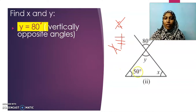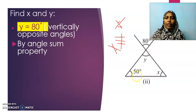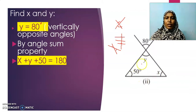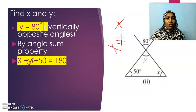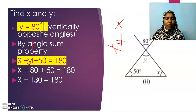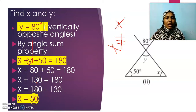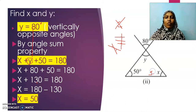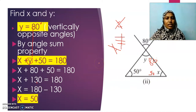Now use the angle sum property of a triangle, which is the property we learned today. We write X plus Y plus 50 equals 180 degrees. Since Y equals 80 degrees, we have X plus 80 plus 50 equals 180. Adding 80 and 50 gives 130. Transposing, we get X equals 180 minus 130, which equals 50 degrees. So X equals 50 degrees and Y equals 80 degrees. Adding all three gives 180 degrees.